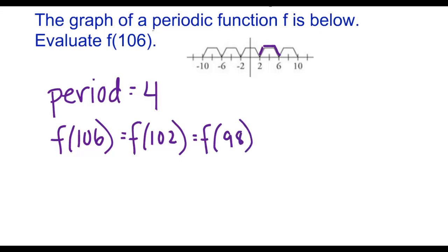Still don't have f of 98. I can keep subtracting multiples of 4 until I get down to something between negative 10 and 10 that I can actually see. Or you could think of, if we just keep doing that, we'll eventually get down to 6, really. Because if you think of 106 as 100 plus 6, and 100 is a multiple of 4, then you could see clearly that that's going to be the same as f of 6.